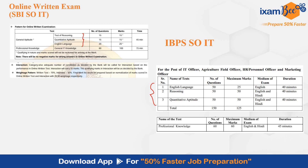You can prepare for English, reasoning, and quant for IBPS SOIT simultaneously while preparing general aptitude for SBI SOIT together. Here the professional knowledge part is 60 questions of 60 marks, while for IBPS SOIT the professional knowledge part is the merit section and the aptitude is the qualifying section.